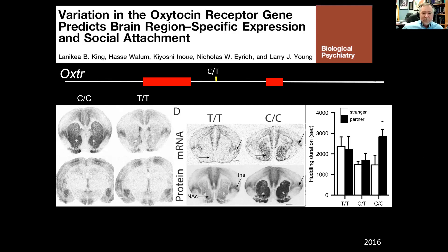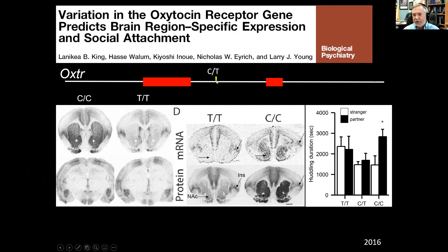Where does this individual variation come from? It's a huge amount of variability within a species — you don't see this kind of variability in mice and rats. We did allelic expression imbalance work and found there are SNPs in the oxytocin receptor gene that in our colony predict 80% of the variation in expression. These SNPs affect expression in the striatum but not in other brain areas like the amygdala. We can genotype animals and predict with high accuracy if they're going to be high expressors or low expressors.